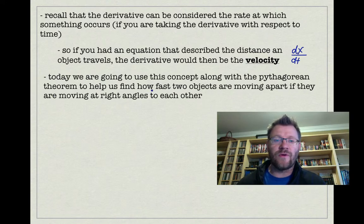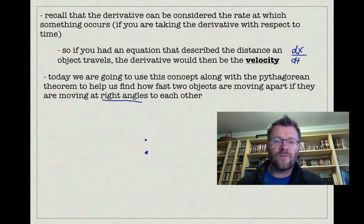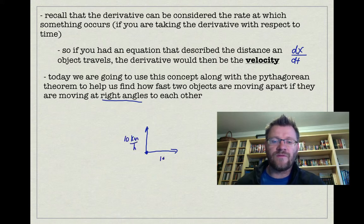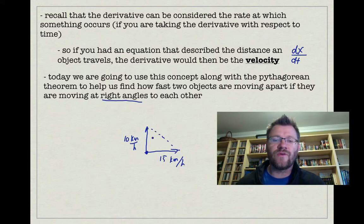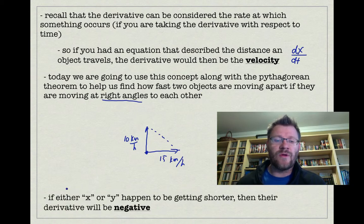Today we're going to use this concept along with the Pythagorean theorem to find out how fast two objects are moving apart — or closer together — if they're moving at right angles to each other. So if one object is moving north and another moving east at different velocities, say 10 km/h and 15 km/h, we can find the rate at which they're moving apart along the hypotenuse at any specific moment in time. Remember that if a distance is getting shorter, its derivative must be considered negative.